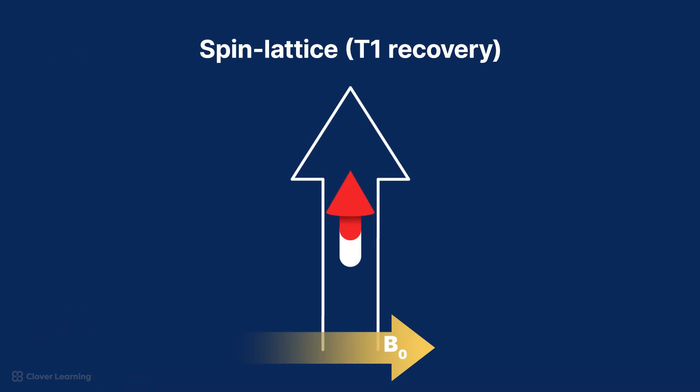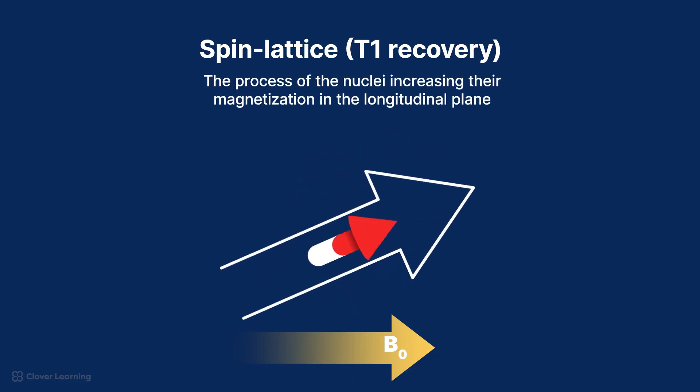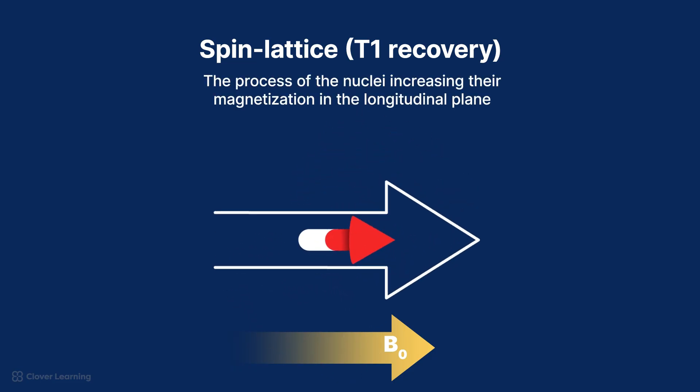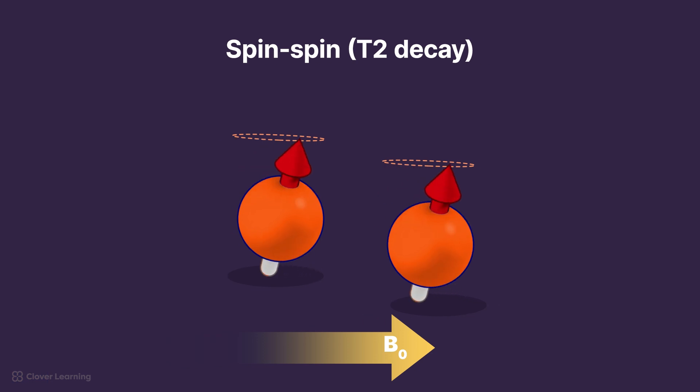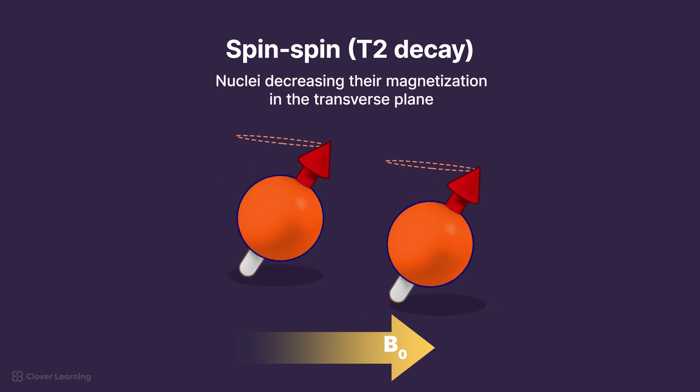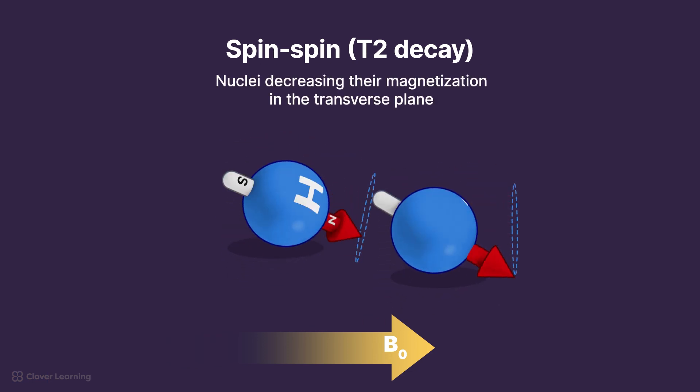T1 recovery refers to the process of nuclei increasing their magnetization in the longitudinal plane, and T2 decay refers to nuclei decreasing their magnetization in the transverse plane.